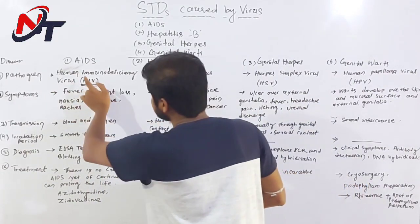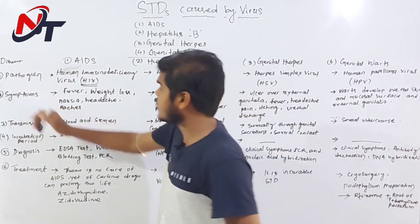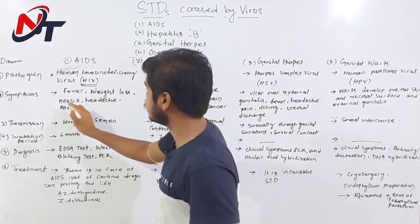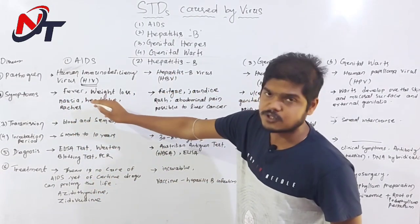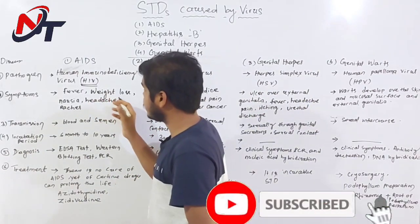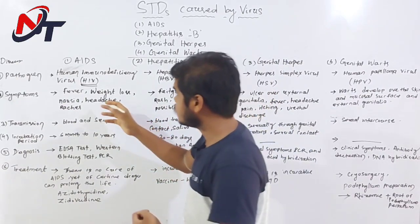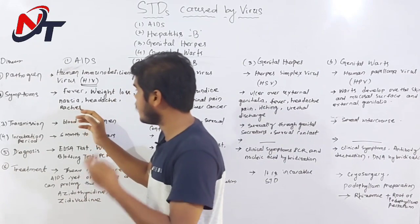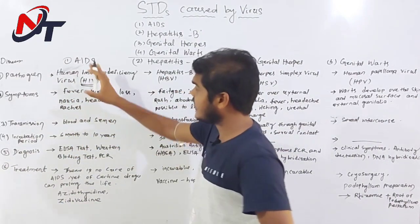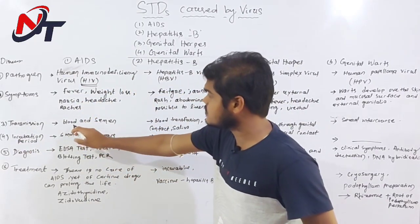What is the human immunodeficiency virus, and what are the symptoms? The symptoms include fever, weight loss, nausea, and headaches. Fever and weight loss mean the body is deteriorating. The symptoms are fever, weight loss, nausea, and headaches. This disease is transmitted through blood.